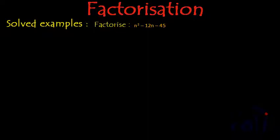Hi, so here we have to factorize n² - 12n - 45. So let me write it down, n² - 12n - 45.